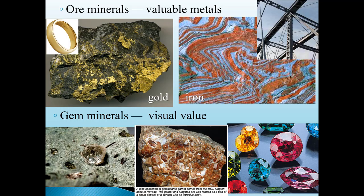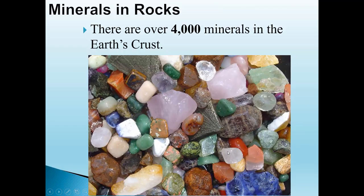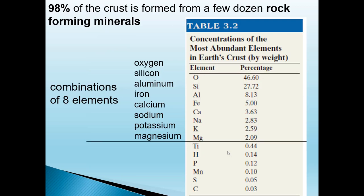And then of course we have gem minerals, things we think are pretty and valuable, stick them in a ring and give them to your girlfriend. However, there are over 4,000 different minerals within our earth and more being identified all the time. So that's a lot of different minerals.